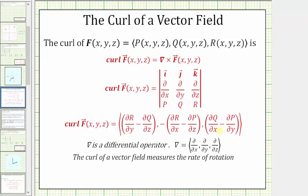That should make sense because the curl of a vector field f in three dimensions points in the direction of the axis of rotation. If we have a two-dimensional vector field, it makes sense that the axis of rotation would be a vertical axis.